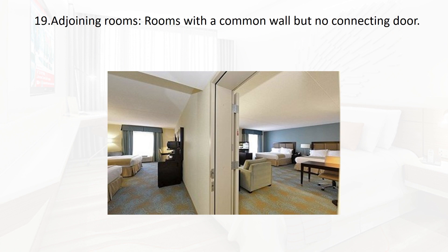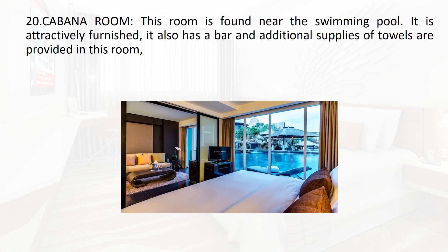Next is the adjoining room — rooms with a common wall but no connecting doors. The rooms are nearby each other and share a common wall, but unlike interconnecting rooms, there is no internal door between them. Such a room is called an adjoining room.